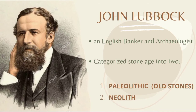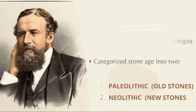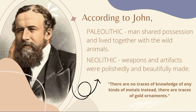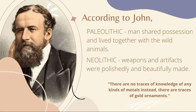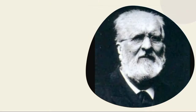In the year 1865, John Lubbock was an English banker and archaeologist, and he is the one who classified the Stone Age into two: namely the Paleolithic, or Old Stones, and the Neolithic, or the New Stones. According to John, the Paleolithic was described as the period where men shared their possessions and their living together with wild animals. While the Neolithic was described as where artifacts and weapons are polishedly and beautifully made. He also stated that there are no traces of knowledge of any kinds of metals; instead, there are traces of gold used as ornaments.